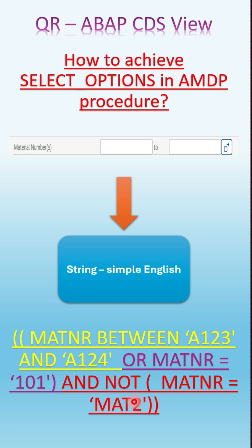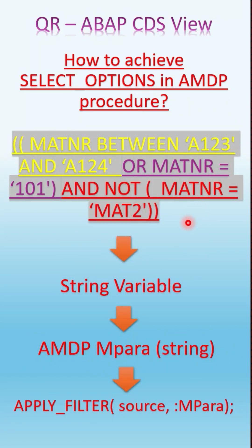Whatever value is entered by the user, it's dynamic — the user may enter anything in the select option. Technically, we'll see how to do that in the next slide. But before that, once this select option statement is ready, store it in a string variable. This string variable is then passed as an AMDP method parameter, which must also be a string data type. So the value is passed from your main program's string variable to the AMDP method parameter variable.